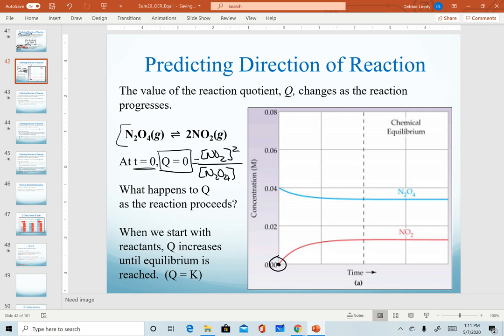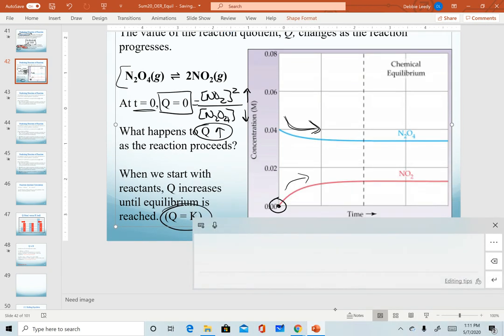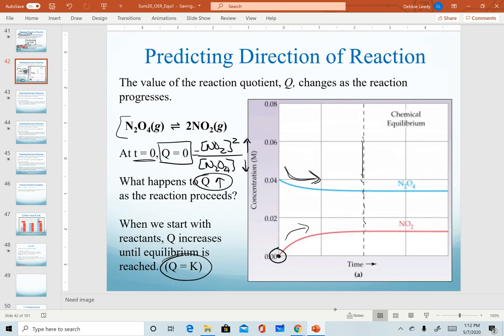However, as the reaction proceeds, the concentration of NO2 will increase. The concentration of N2O4 will decrease as we see here in these graphs. Products are increasing, reactants are decreasing. And so as the reaction starts, the value of Q will go up. And it will go up until Q reaches the value of K. So again, at this dotted line, where our system has set up equilibrium, this is the point where Q will equal K.